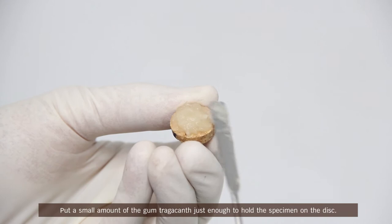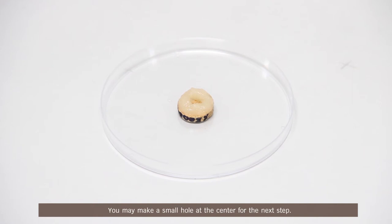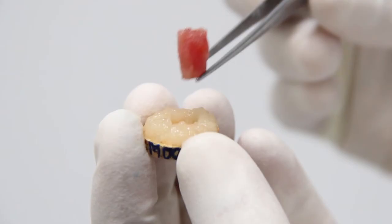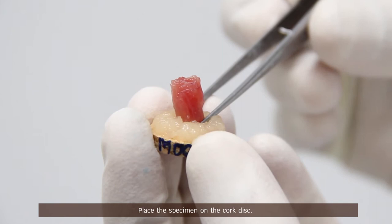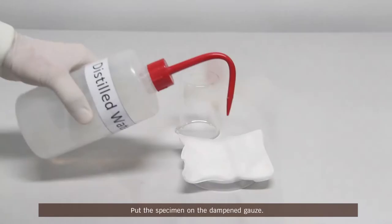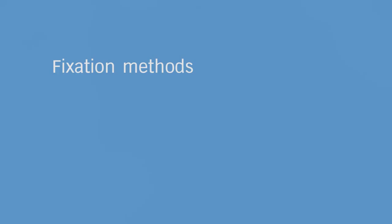Put a small amount of the gum tragacanth, just enough to hold the specimen on the disc. You may make a small hole at the center for the next step. Place the specimen on the cork disc. Cover the bottom of the specimen with gum tragacanth, so it will be held upright. Put the specimen on the dampened gauze. Cover it with a glass beaker to preserve moisture while preparing for freeze fixation.